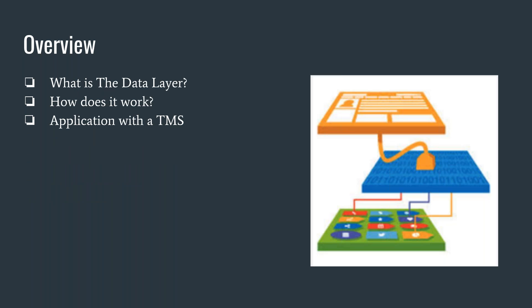So, first thing to start with — the overview. What is the data layer, how does it work, and that application with the tag management system. The visualization I have here is actually from Tealium, which is one of the larger enterprise tag management systems on the market. They put together this visual a couple years ago, and I think it's honestly the best for visualizing how exactly a data layer works and how it plugs in.